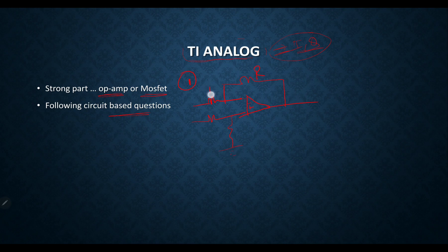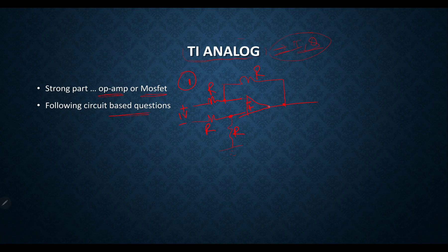All resistances are shown here and the voltage here is one volt. The interviewer asked me the node voltage at each node and all branch currents — what will be the current value in each branch. That was the first question.